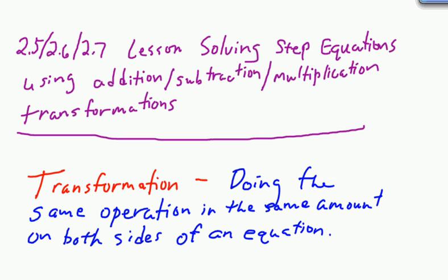This is a lesson on solving one-step equations using addition, subtraction, and multiplication transformations. The way I'm going to present the material is a bit different than you may see in the book at times, so you want to follow the procedures I show you rather than the book. I would definitely call this the Green Hill Math Department way.